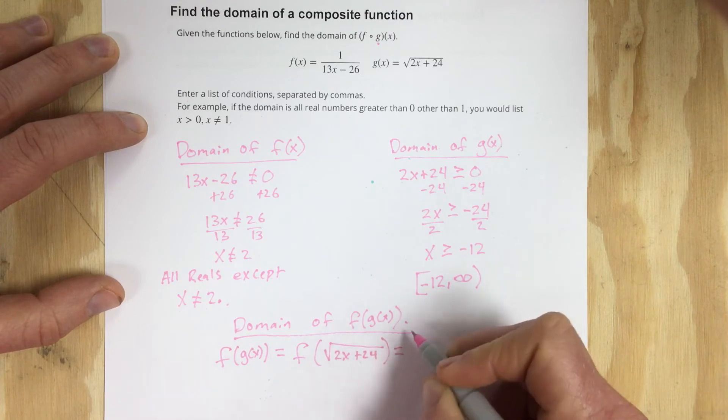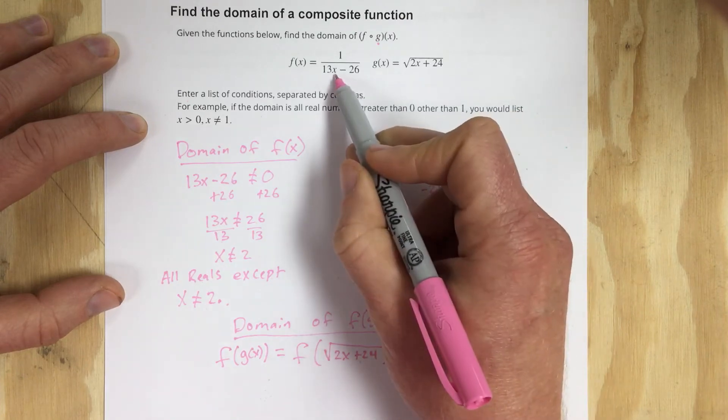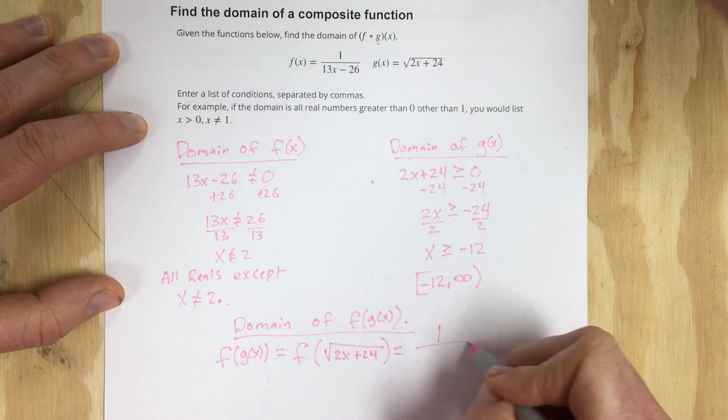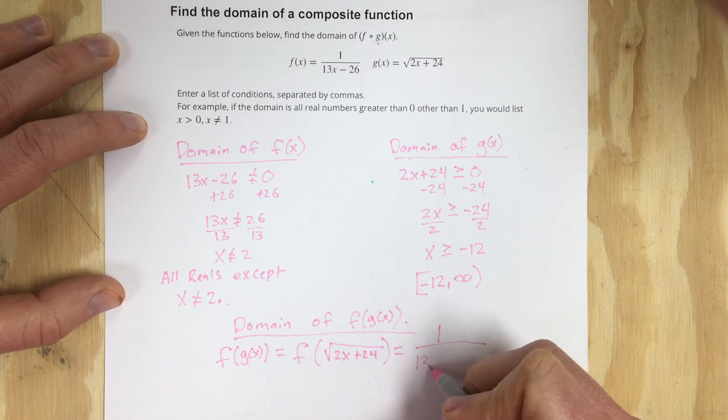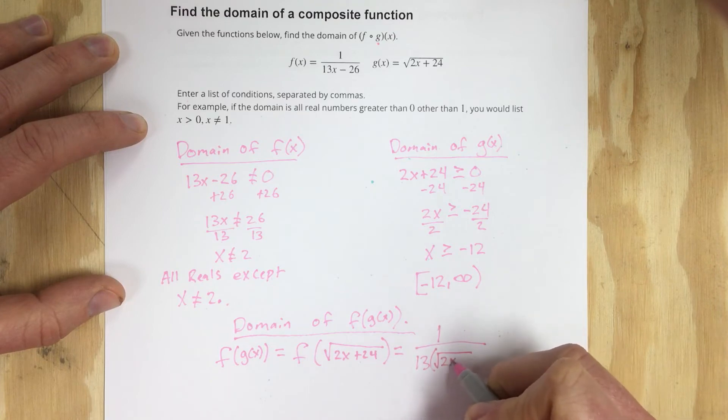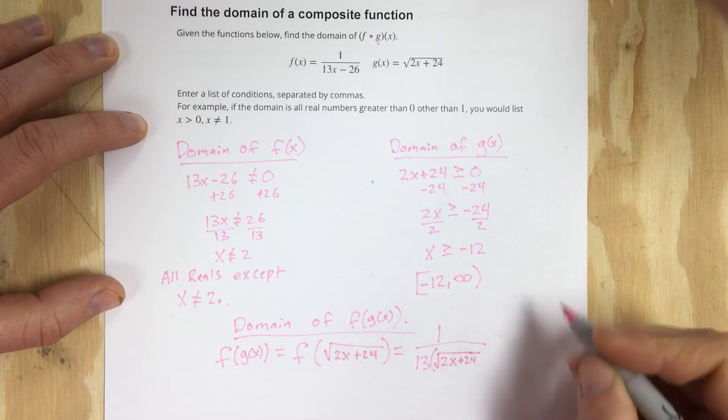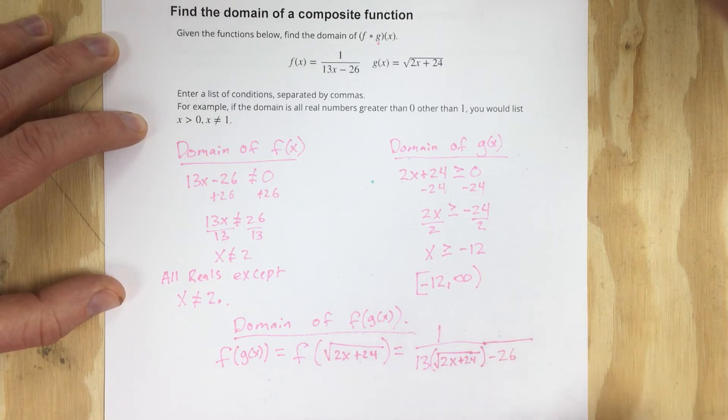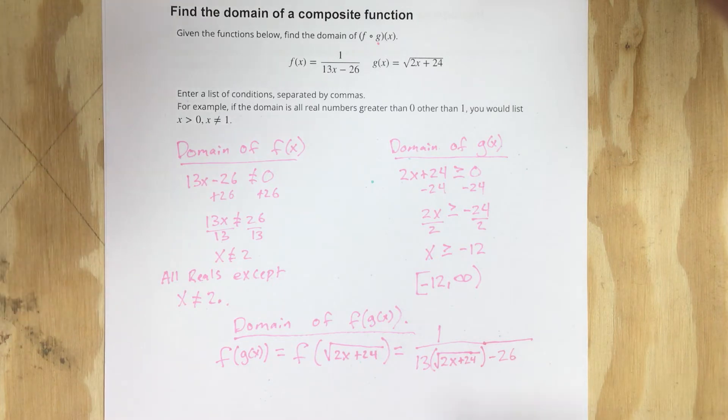I'm going to plug that in for the x value in f. That'd be 1 over 13 times root 2x plus 24 minus 26. So we have a couple things going here.